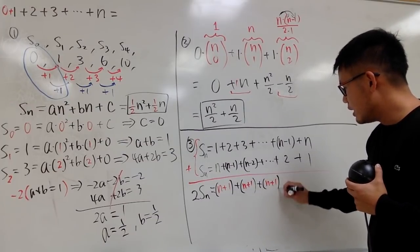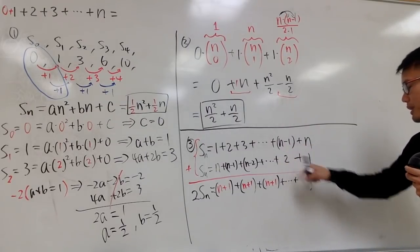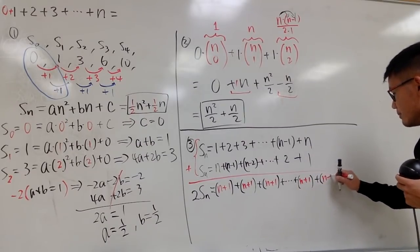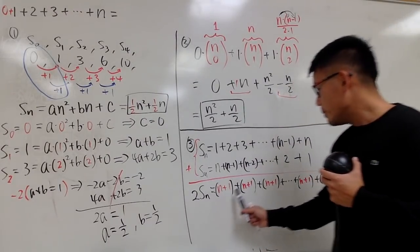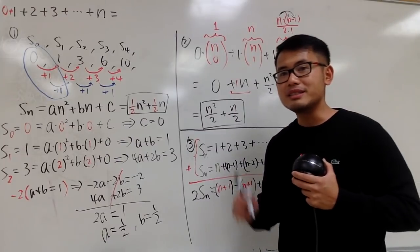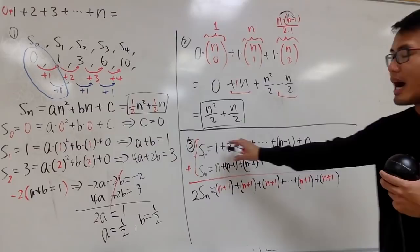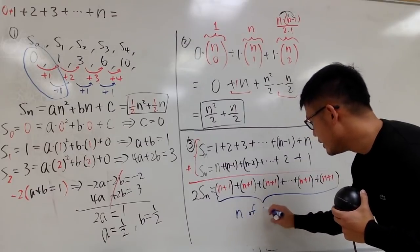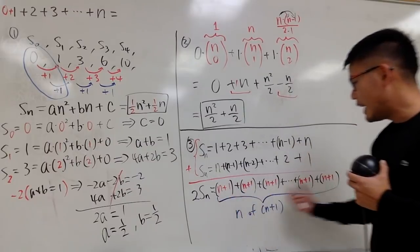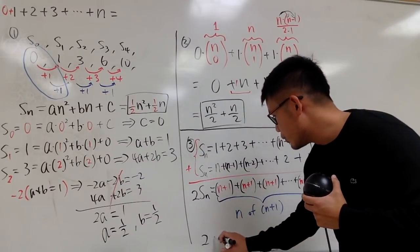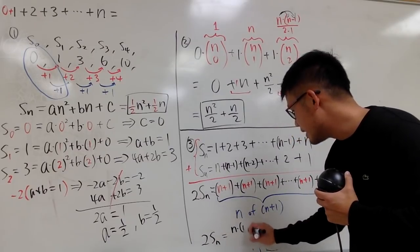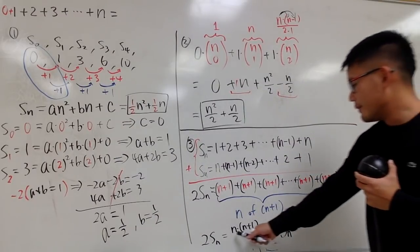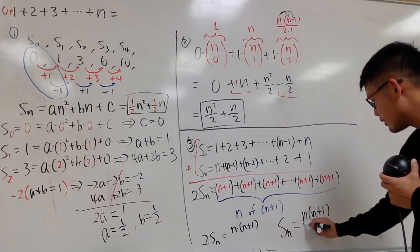Every pair gives n plus 1. How many of these parentheses do we have? The answer is n of them, because we have n terms. So 2Sn equals n times n plus 1. Dividing both sides by 2, Sn equals n times n plus 1 over 2.